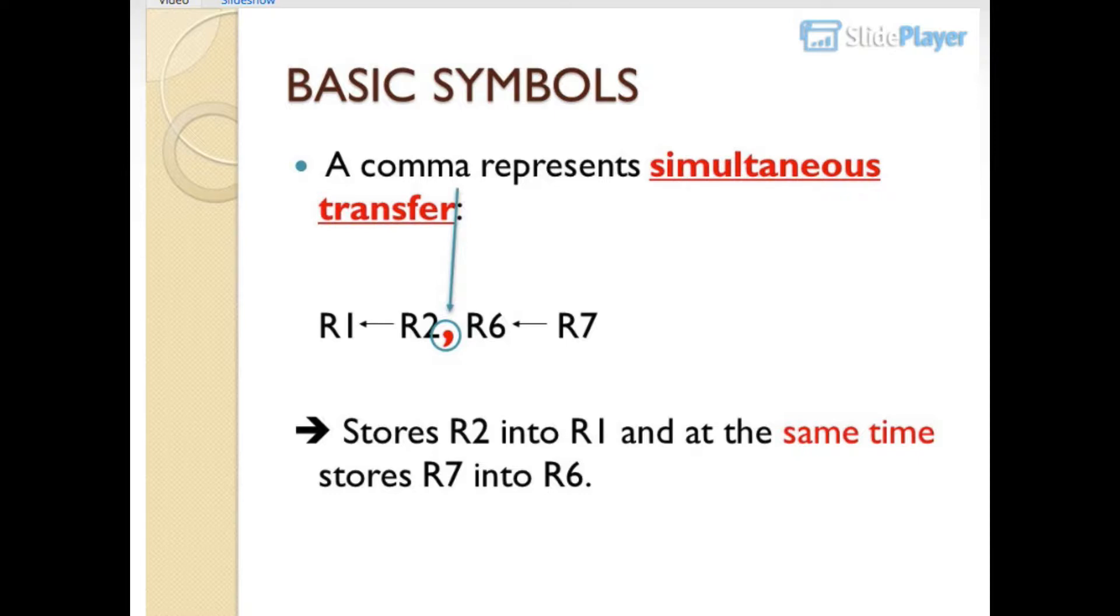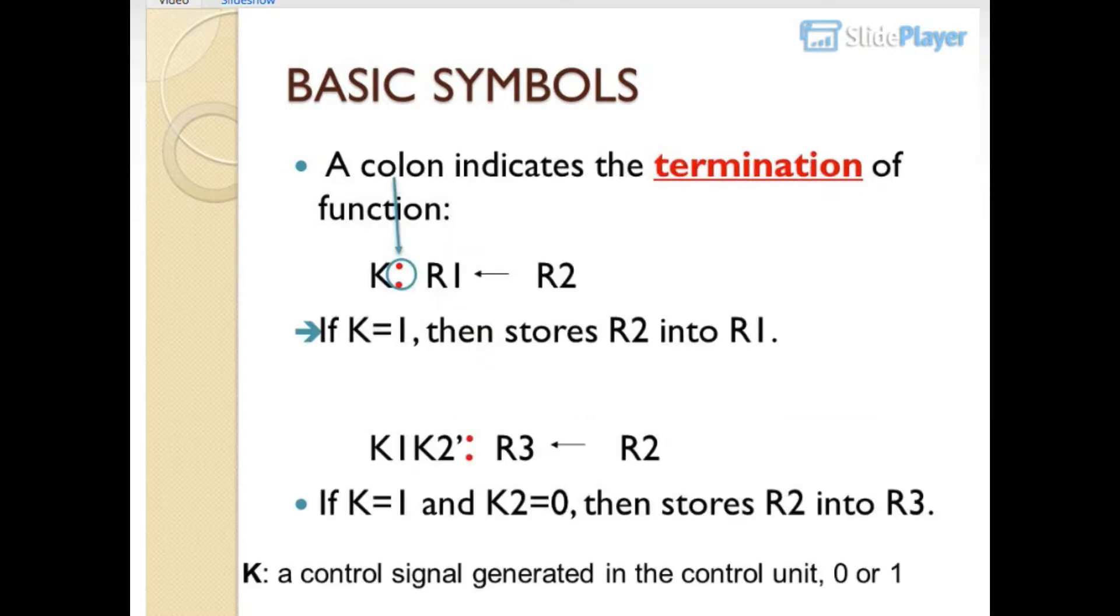Basic symbols: a comma represents simultaneous transfer. R1 gets R2, R6 gets R7 stores R2 into R1 and at the same time stores R7 into R6. A colon indicates the termination of function. If K equals 1 then stores R2 into R3.